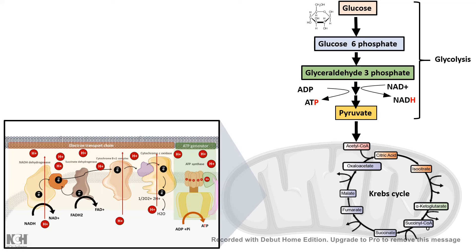This is followed by an electron transport chain to generate more ATP. So this whole process of using glucose and channeling it through glycolysis, the Krebs cycle, and the electron transport system ensures that we have enough ATP for other metabolic and biological processes inside a cell.